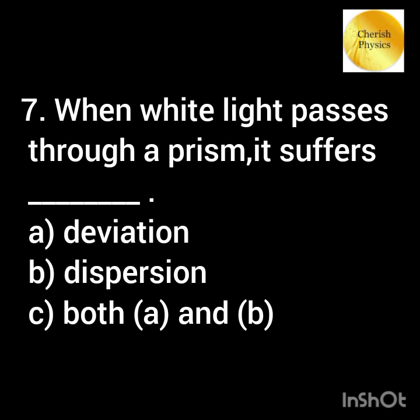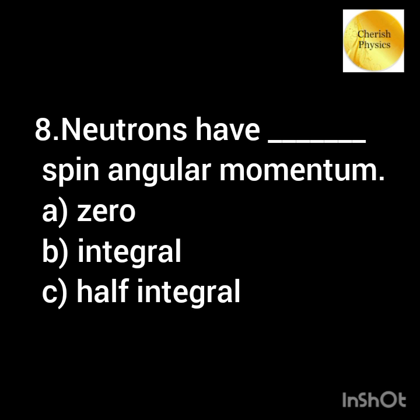When white light passes through a prism it suffers? Neutrons have dash spin angular momentum.